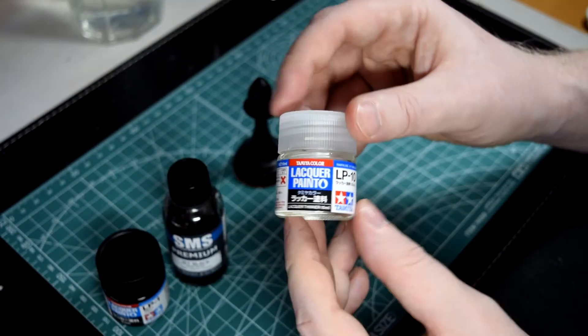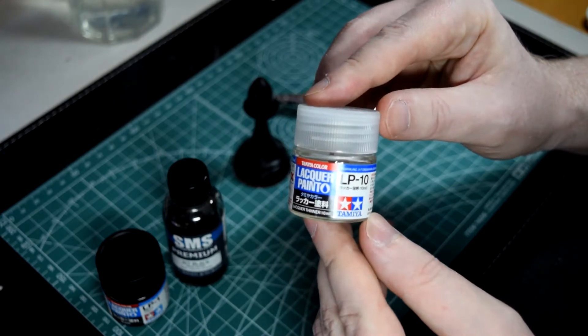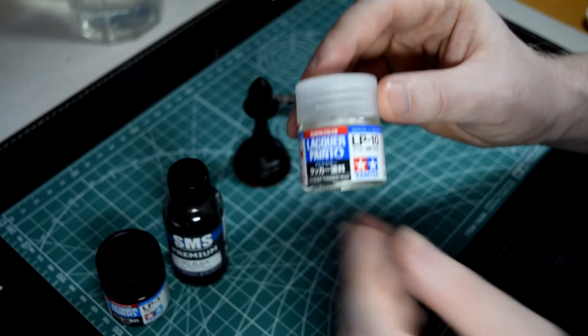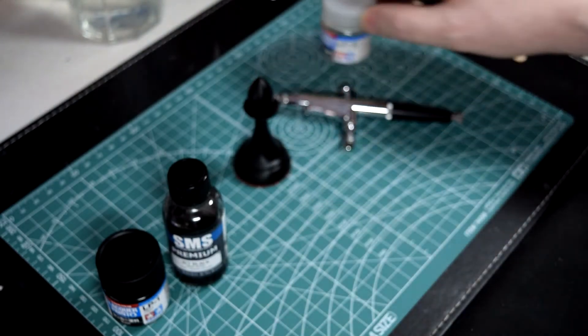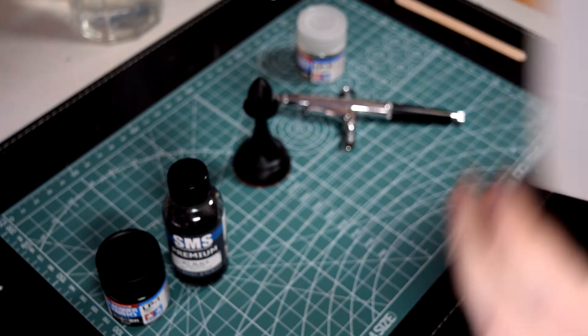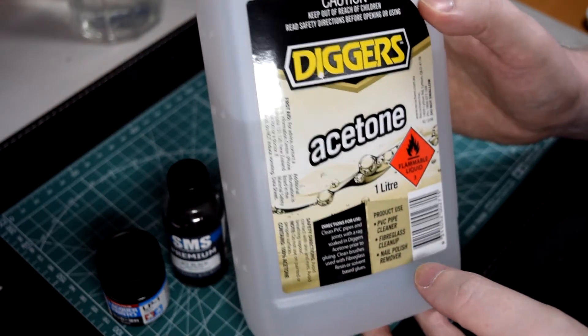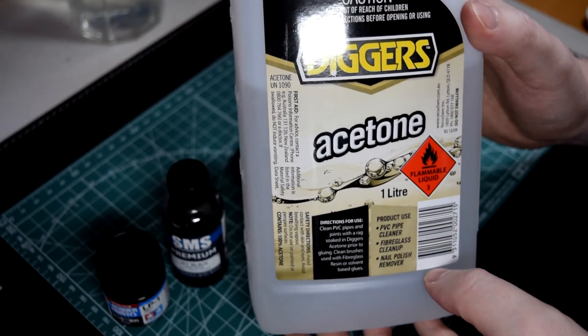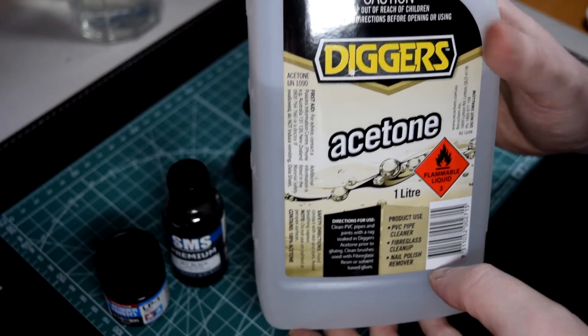Now, lacquer paints use lacquer thinner, which is quite expensive if you buy it in small pots like this. Since lacquer paint is basically nail polish, you can use nail polish remover, which is acetone, to thin it. So it's much cheaper to buy a big bottle of acetone like this to thin your lacquer paints.